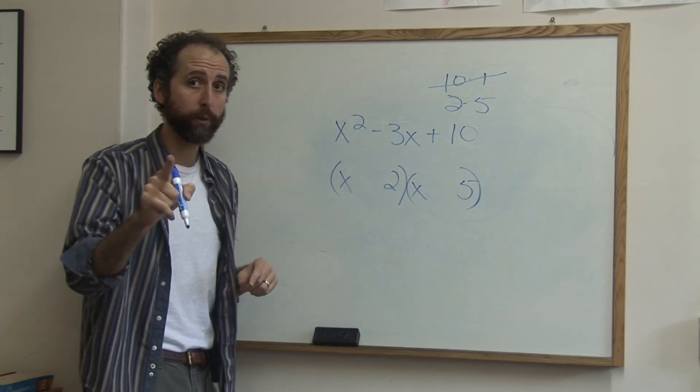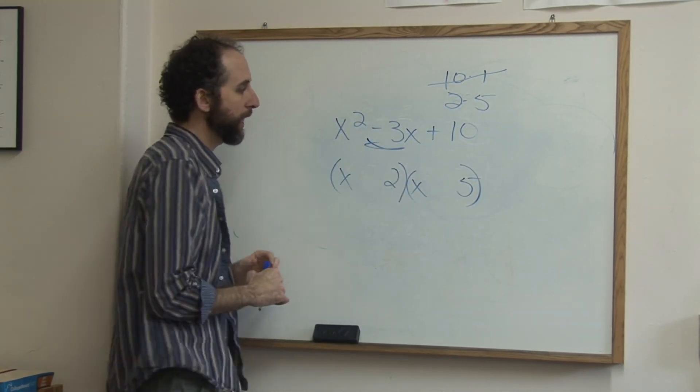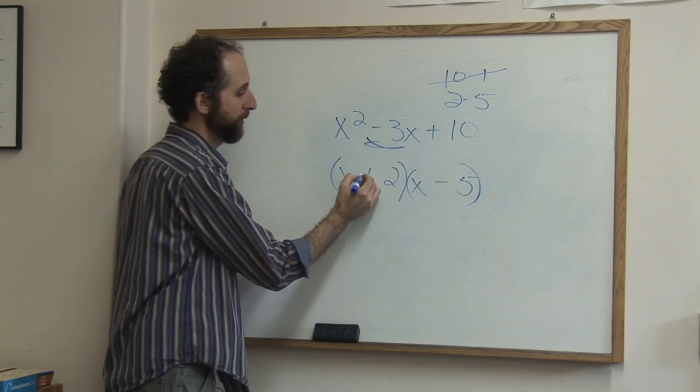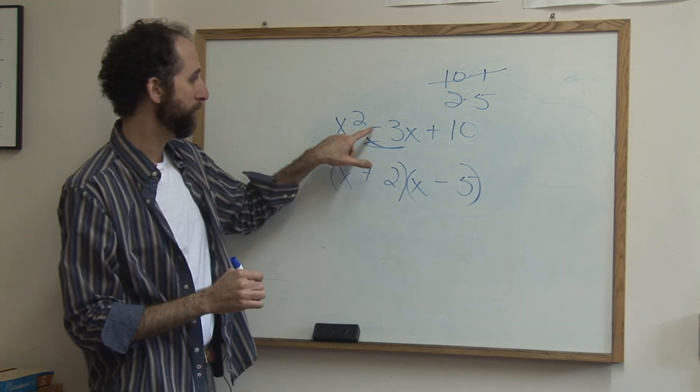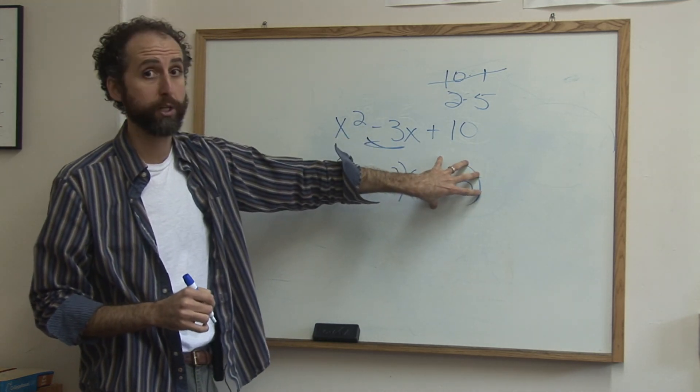We've got to figure out our signs. Now here's the deal. This is a negative 3, so we need that to be negative, this to be positive. Whatever that sign is, you want the larger of the two numbers to match that sign.